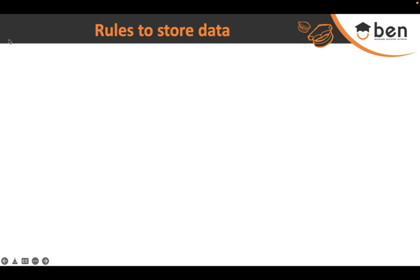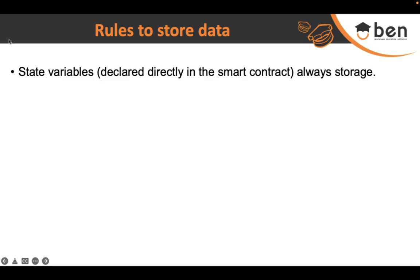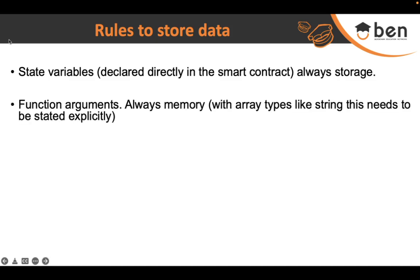There are certain rules in Solidity to follow when declaring variables for their storage locations. First, state variables declared at the contract level will always be stored in storage — there is no question of memory or stack here. Second, function arguments also always get stored in the memory area. When passing reference types like strings in function arguments, you must explicitly write the keyword `memory`.